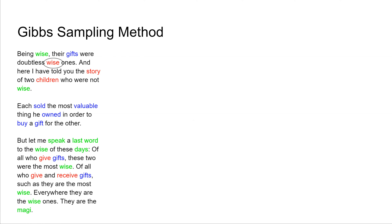This method is an example of collapsed Gibbs sampling, since our sampling of the topic assignment for the current word is based only on the observed words and the topic assignments of the other words. The sampling does not depend on the distribution of topics for each document, nor on the distribution of the vocabulary for each topic — these variables have been integrated out.